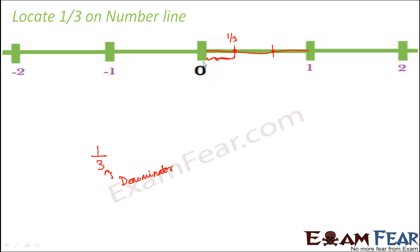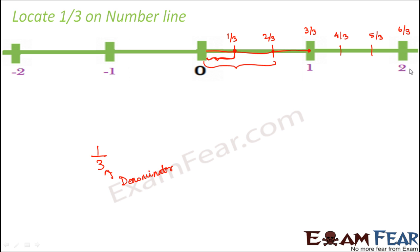So what would be this next point when measured from 0? This would be 2 parts out of 3 equal parts, so this would be 2 by 3. Similarly, this point would be 3 by 3, and 3 by 3 is nothing but 1. If you continue this marking further, this becomes 4 by 3, this becomes 5 by 3, this becomes 6 by 3. So 6 by 3 is nothing but 2. This is how we are locating the fractions.